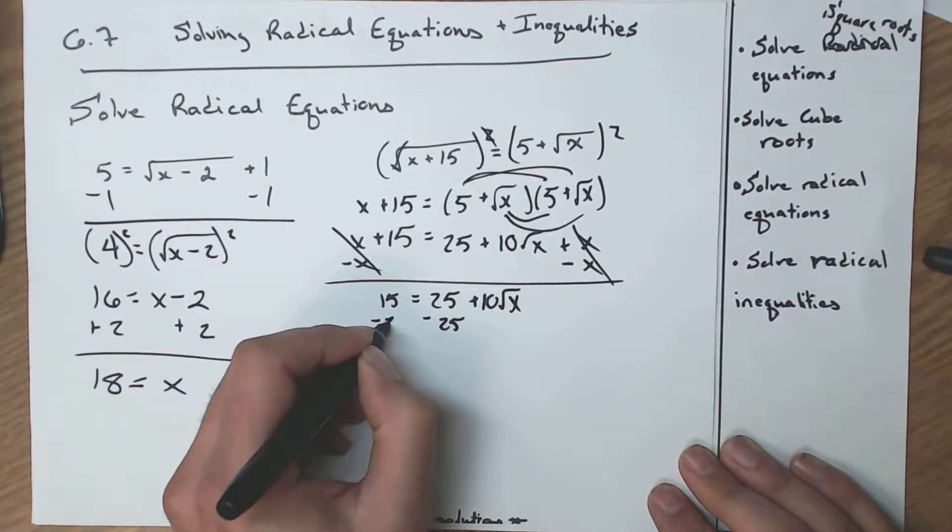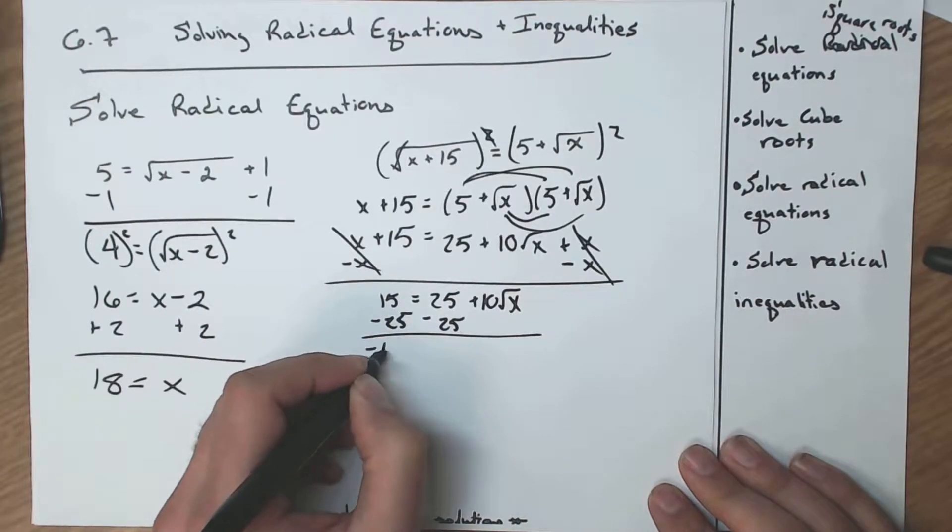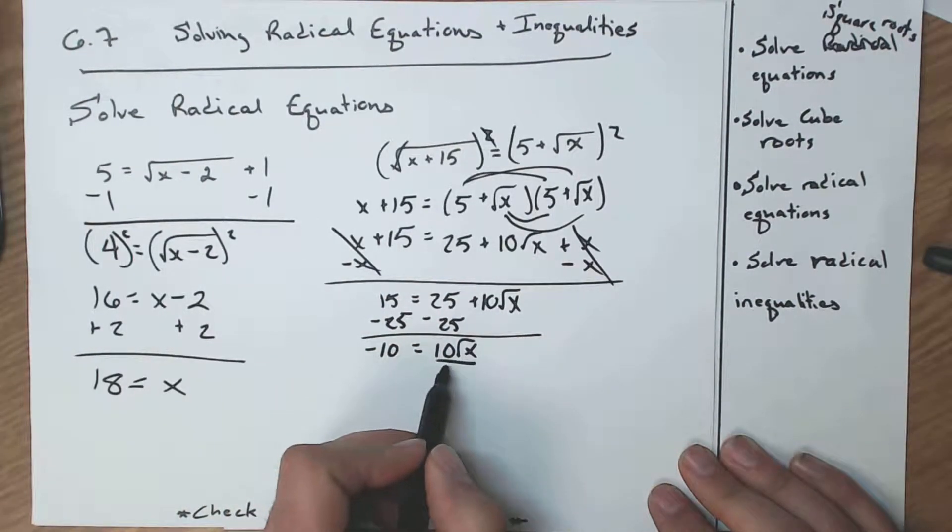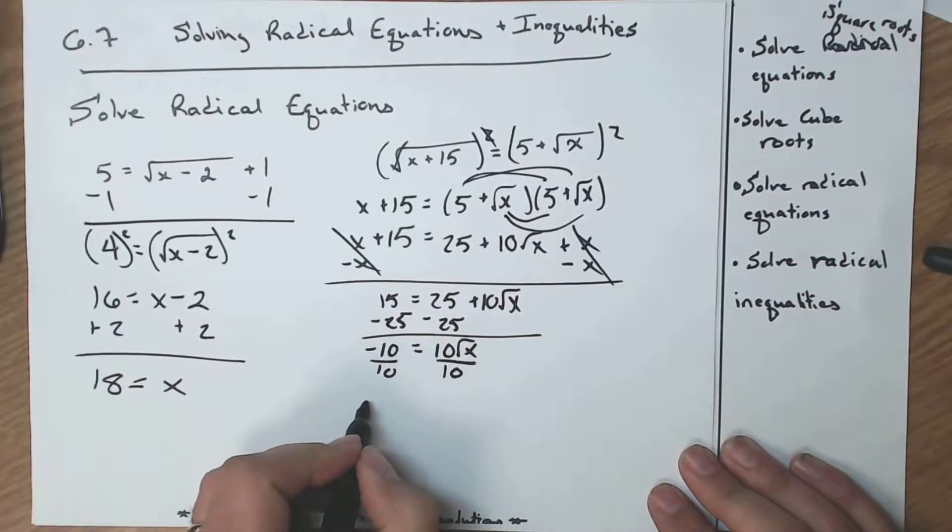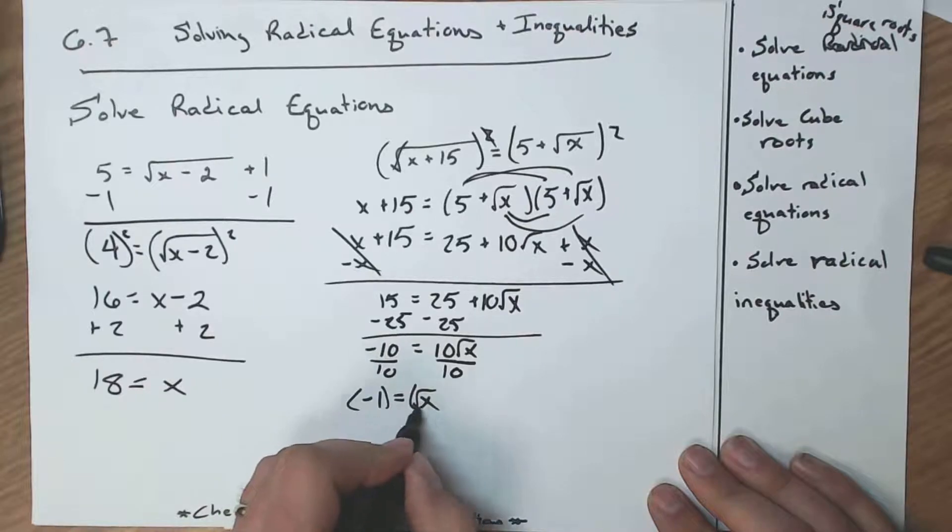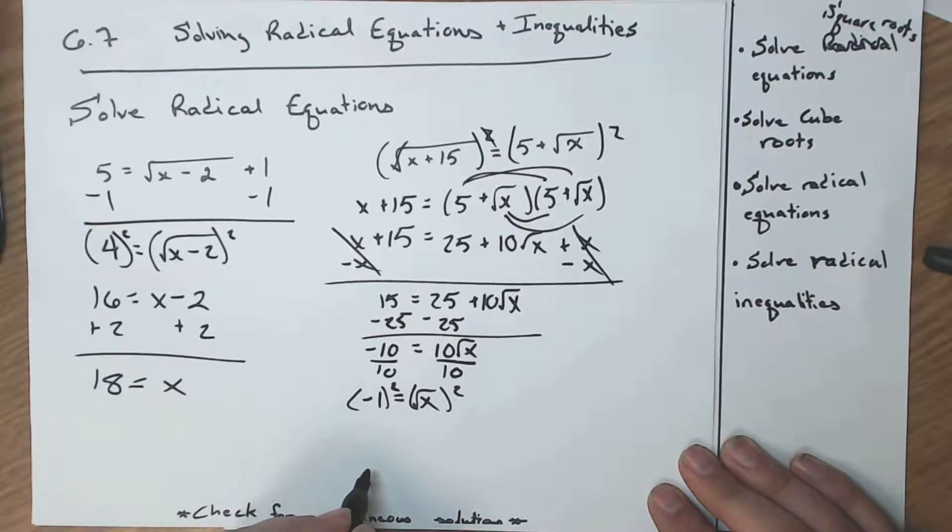Subtract the 25, because I'm trying to isolate my square root. Now I'm going to divide by 10. So negative 1 equals square root of x. Well, to get rid of a square root, what do we do? We square it. Negative 1 squared is a positive 1 equals regular x. Awesome.